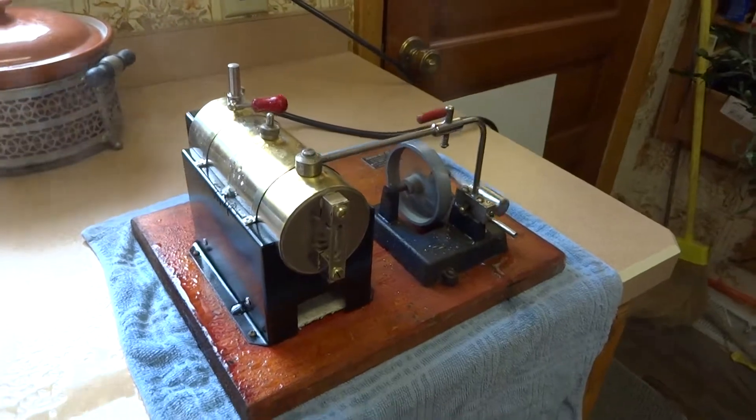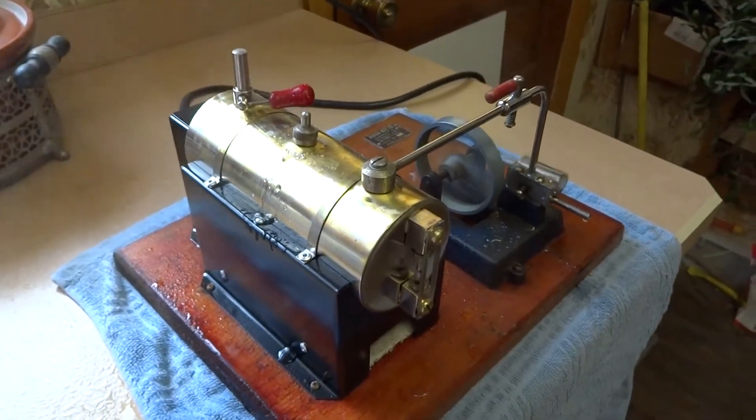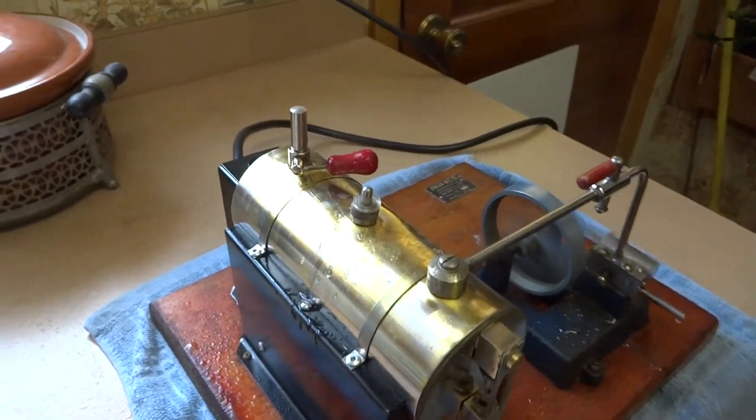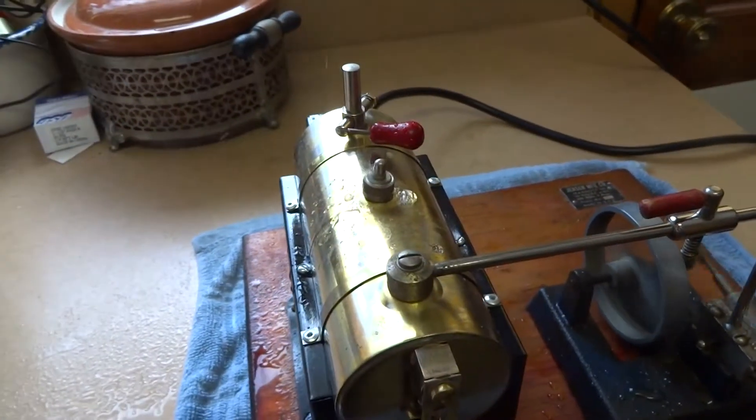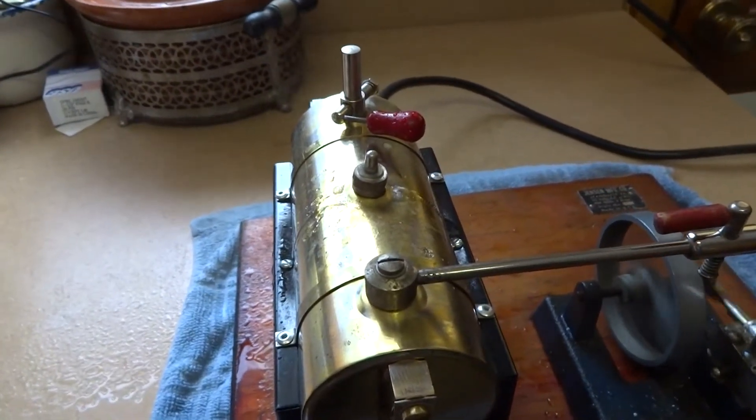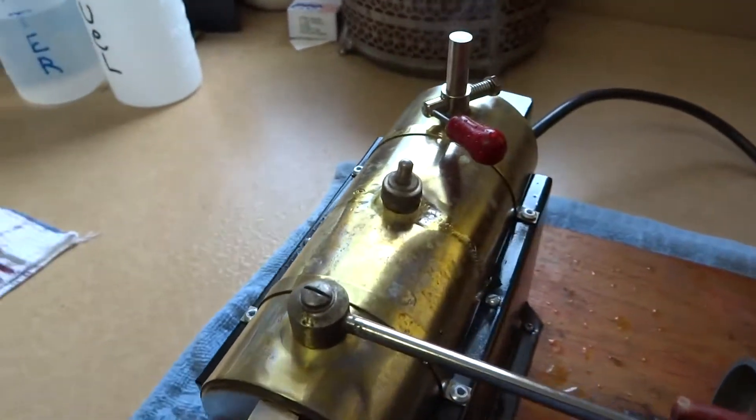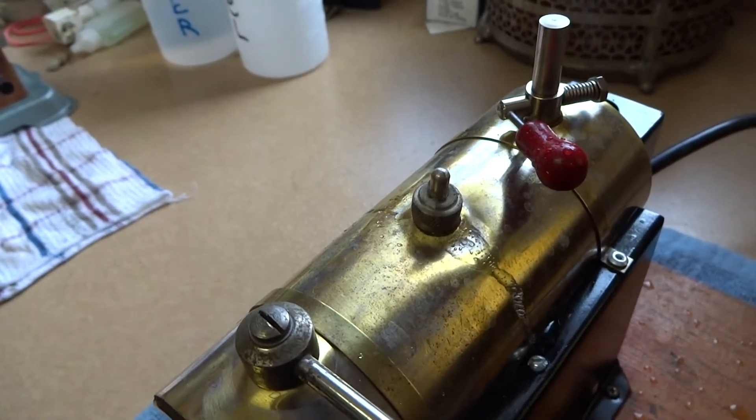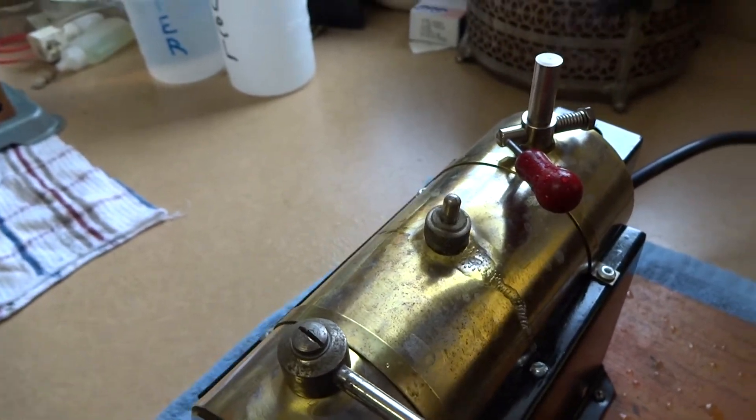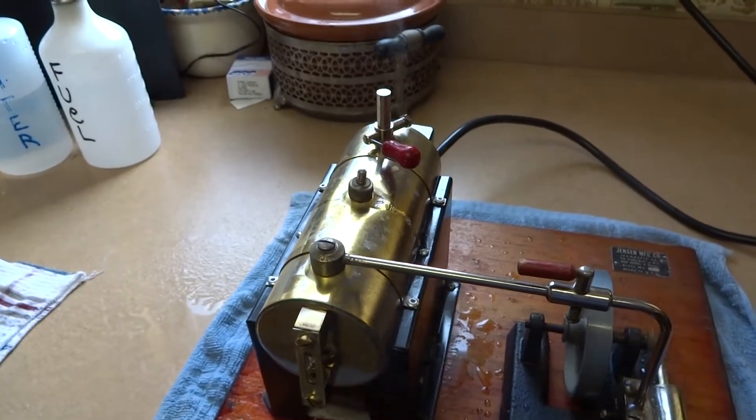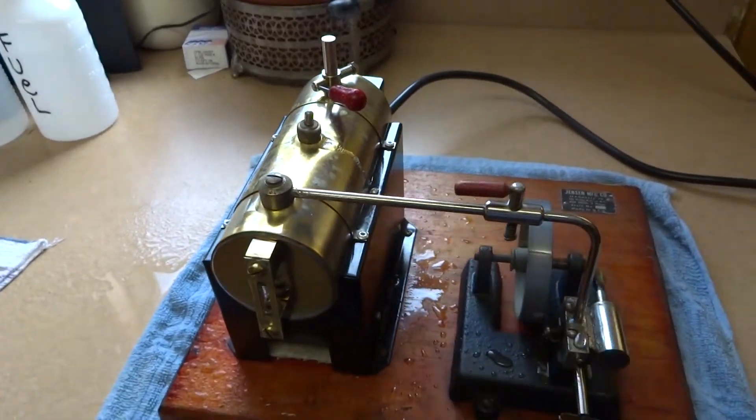You also want to be careful when you have one of these shipped to you that the whistle is usually in the center position. Ask the seller to remove that because you can see this one's bent in the center. That's where the whistle was and that's how they get bent.